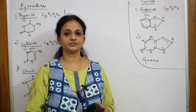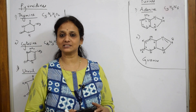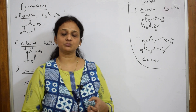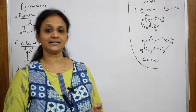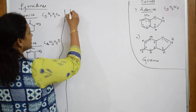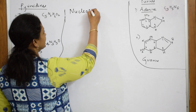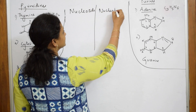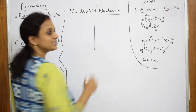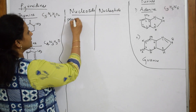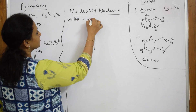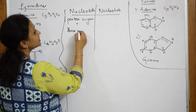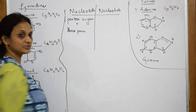We have already learnt the definition of nucleic acid and the classification of nucleic acid, that is DNA and RNA. Now let us learn one more concept called nucleoside and nucleotide. A nucleoside is basically a combination of pentose sugar plus a base — that is your purines and pyrimidines.